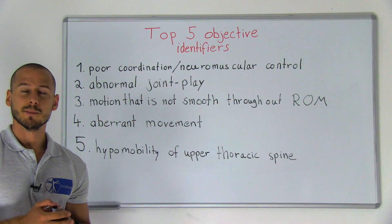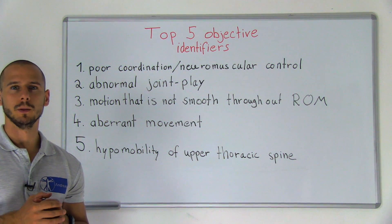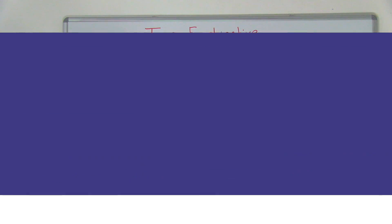And at last, number five, which is hypo-mobility of the upper thoracic spine. As mentioned in our previous video on lumbar spine instability, it is important to recognize that there is no valid clinical test to diagnose spinal instability. Therefore, a Delphi study is the best available evidence we have.